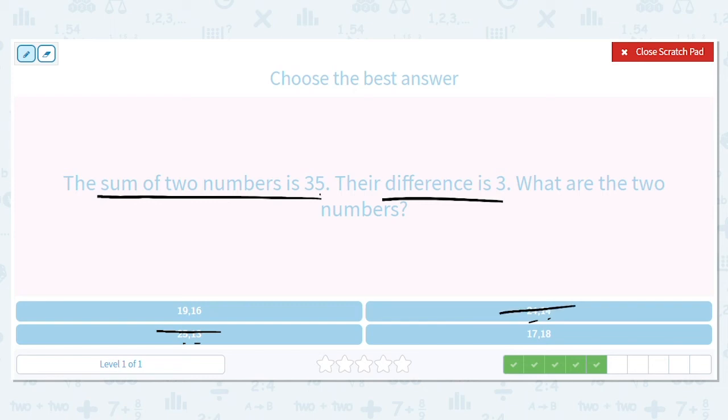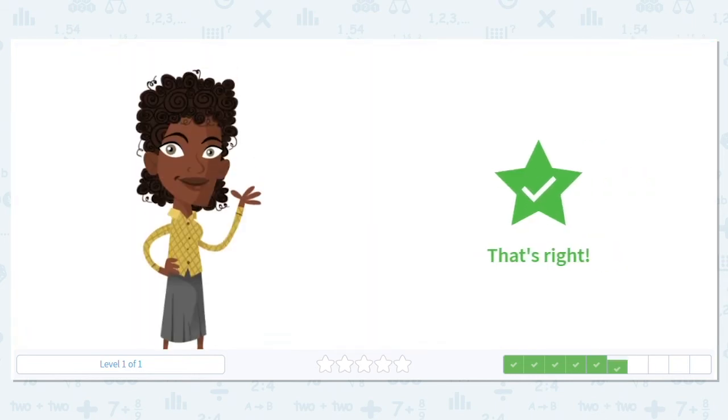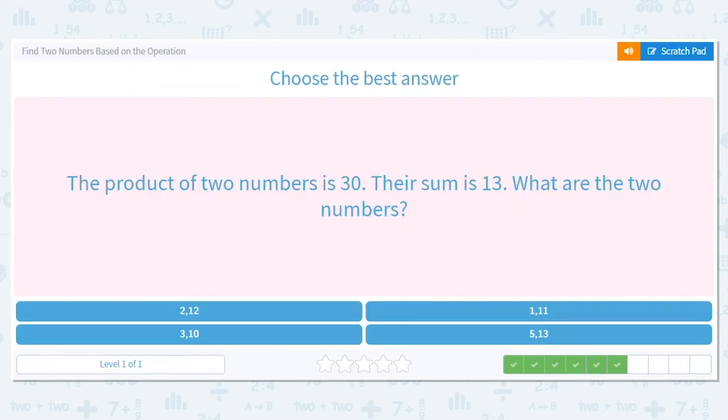So that means it's either 17 and 18 or 19 and 16. We know they both equal 35. So let me try 19 minus 16. Does that give me a difference of 3? It does. So that means 19 and 16 are the numbers we need.